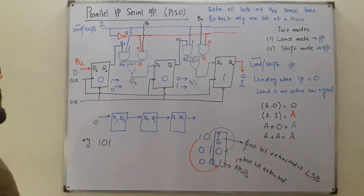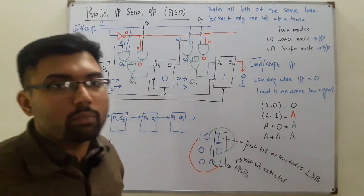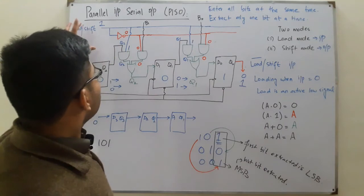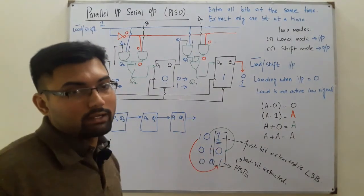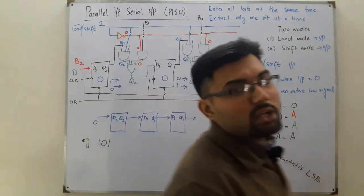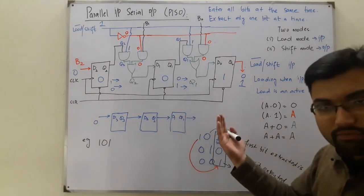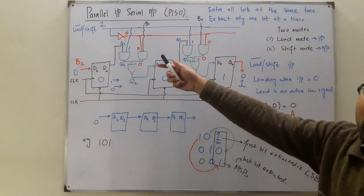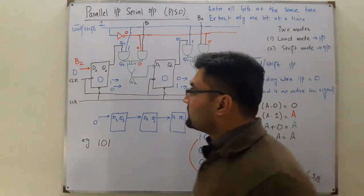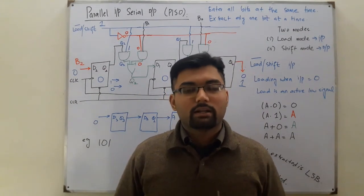The main point was the load and shift input control. For input, we make the load signal equal to zero (active low) to load data into the flip-flops in parallel. To extract, we make the signal high to use shift mode, extracting one bit at a time serially. That's all about the PISO register and the important types of registers. Take care of yourselves and everyone around you. Goodbye.